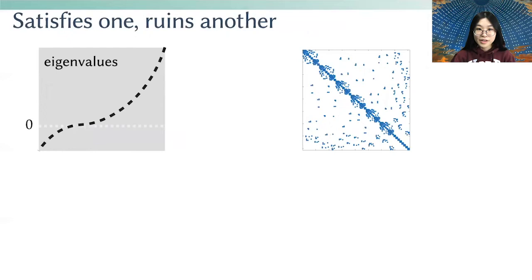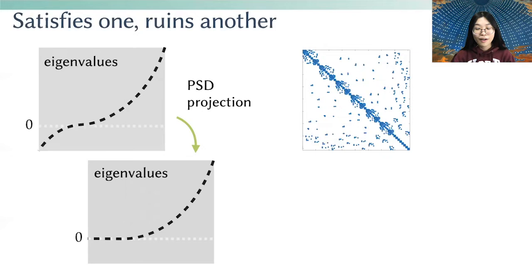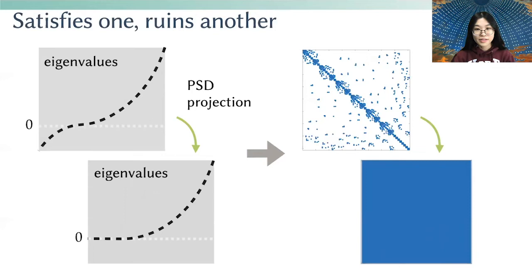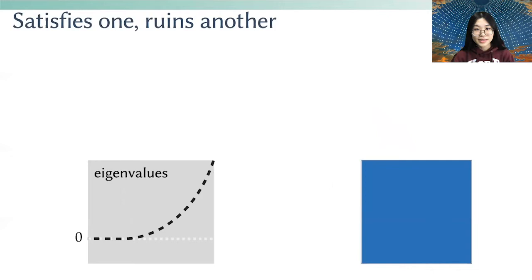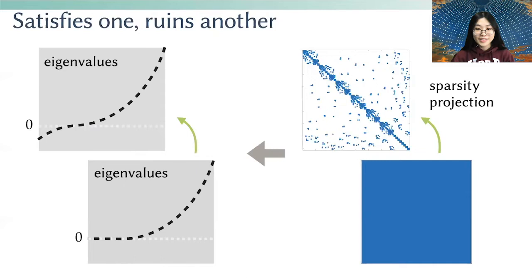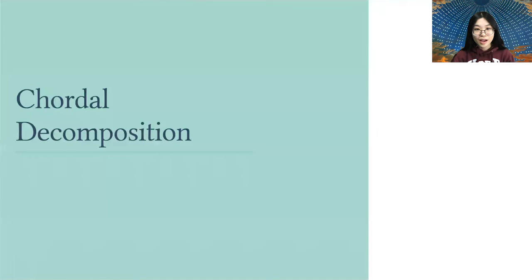Suppose we want to project a sparse matrix with an arbitrary sparsity pattern to positive semi-definite. The standard way of doing this is to clamp all the negative eigenvalues to zero. However, because the eigenvectors are dense, the resulting matrix after the PSD projection will also be dense. If we then project the dense PSD matrix back to its sparsity pattern, the resulting matrix may no longer be positive semi-definite.